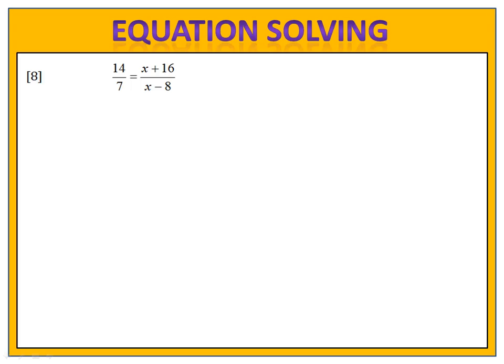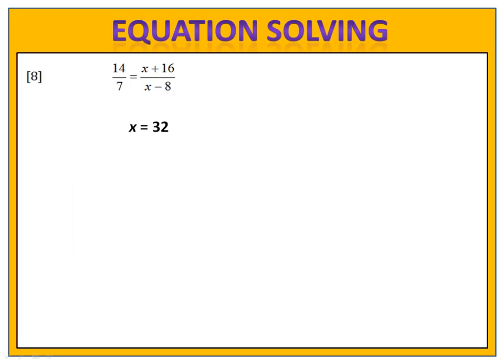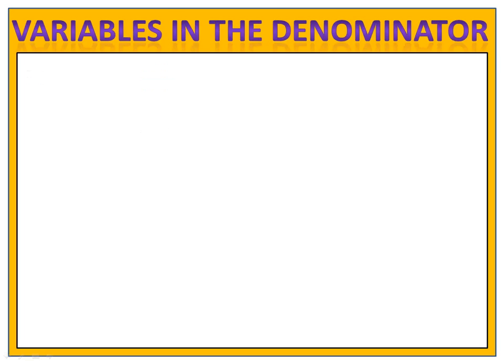In exercise 8, we have 14 sevenths equals x plus 16 over x minus 8. We want to solve this equation by clearing out the denominators, multiplying both sides by the appropriate expression. Please pause the video here and complete exercise 8. We solve this equation and we get x equals 32. We check our answer — 32 does not cause the denominator to be zero, so it's a valid solution. When you solve equations with variables in the denominator, remember to always check your answer and make sure it doesn't cause the fraction to become undefined. This is everything you need to know about solving equations with variables in the denominator.